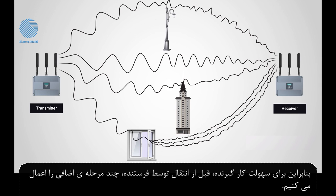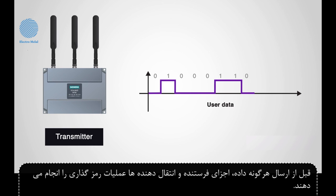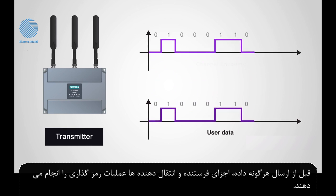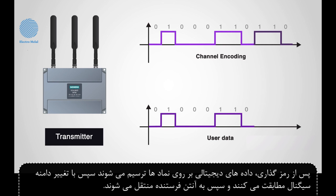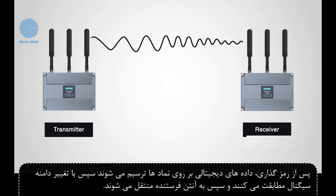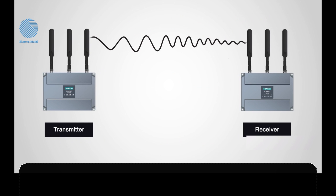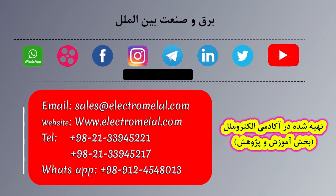To make the receiver's job easier, we add some additional steps before transmission. Before sending any data, the transmitting components perform the encoding. The encoding operation appends additional bits into the message, which makes the data recovery at the receiver much simpler. After the encoding, digital data are mapped onto symbols, then modulated by varying the signal amplitude, and then passed to the transmitting antenna.